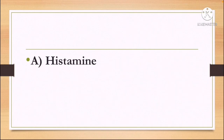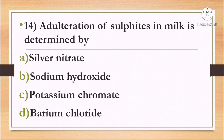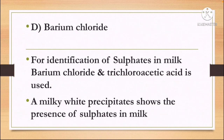Next question: adulteration of sulphides in milk is determined by — Option A: Silver nitrate, Option B: Sodium hydroxide, Option C: Potassium chromate, and Option D: Barium chloride. The correct answer is Option D, Barium chloride. For identification of sulphides in milk, barium chloride and trichloroacetic acid is used. A milky white precipitate shows the presence of sulphides in milk.